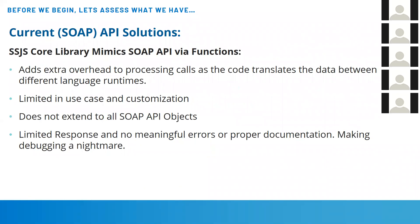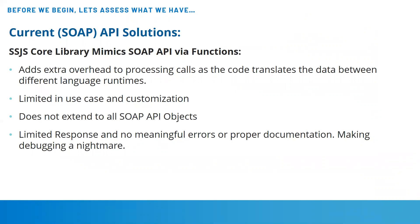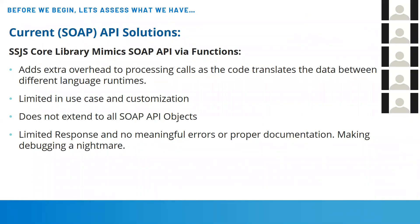Moving on to the current SOAP API solutions — we have the core library, which adds extra overhead to the processing calls because the code has to be translated between different language runtimes. Even though it offers more functionality, the functionality is limited and there's really no customization of it. It's what you see is what you get. It does not extend to all of the SOAP objects, and as seems to be a trend in Marketing Cloud, there is very limited response and really no meaningful errors or proper documentation on what each function should be doing.